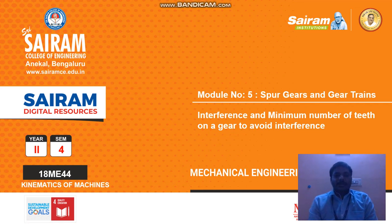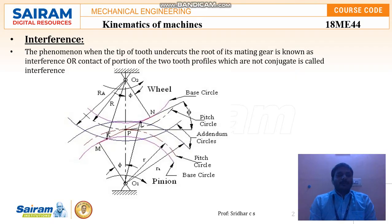Welcome back. In the previous video we discussed the length of path of contact. In this video we are going to discuss interference and the minimum number of teeth to avoid interference. Interference is the phenomenon when the tip of a tooth undercuts the root of its mating gear. This non-conjugate contact between two tooth profiles is called interference.